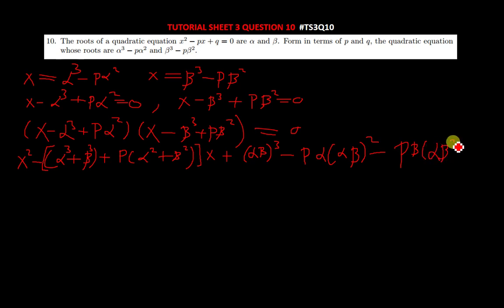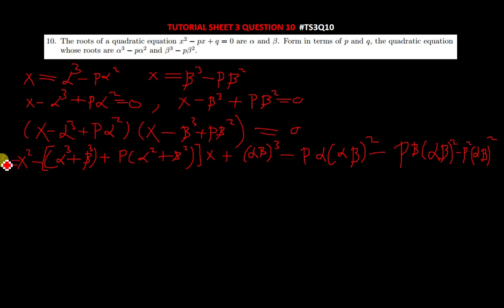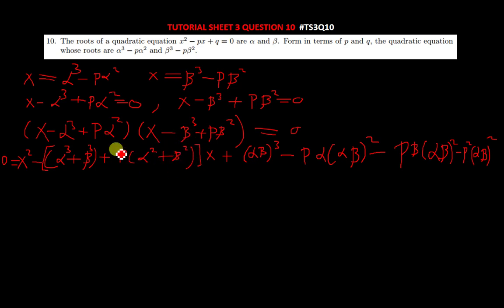After simplifying and factorizing, you're going to have p squared there, and then alpha beta squared as the last term — all of this equated to zero, don't forget. Now what remains is to find the alpha and beta expressions. Let me give you those expressions.